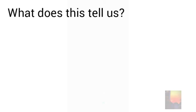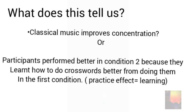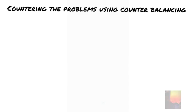Now a question arises: was classical music really the main factor that improved concentration? Or did the participants perform better in condition 2 because they already learned how to do crosswords better from doing them in the first condition? Now to counter these problems that could arise, we are going to use counterbalancing.